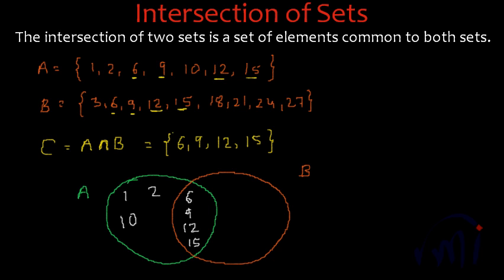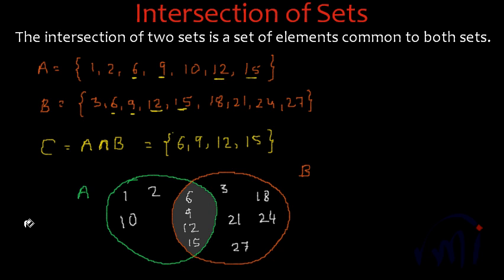Then we have to write all the elements of set B which are not in the overlapping area. So those elements will be 3, then 18, then 21, 24 and 27. These are the elements which are not in set A but are in set B. This overlapping area is called the area of intersection and it actually represents A intersection B.